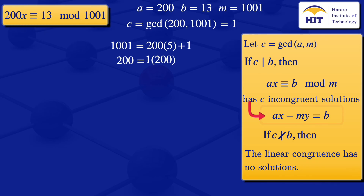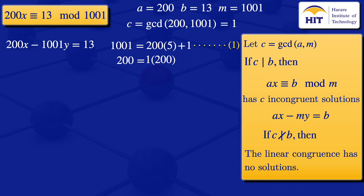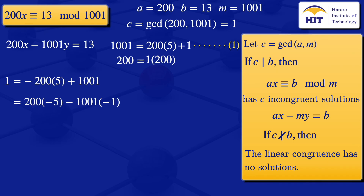To find that solution, solve 200x − 1001y = 13. Label this equation 1. From the Euclidean step, 1 = 1001 − 200 × 5, which gives −200 × 5 + 1001 = 1. Rewriting with positive 200: 200 × (−5) − 1001 × (−1) = 1.